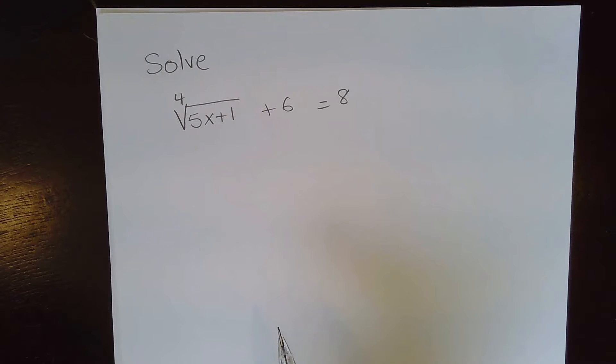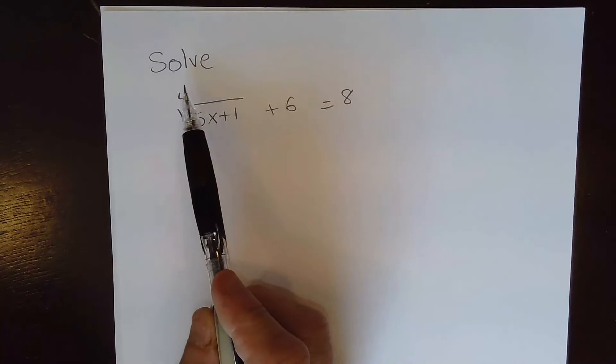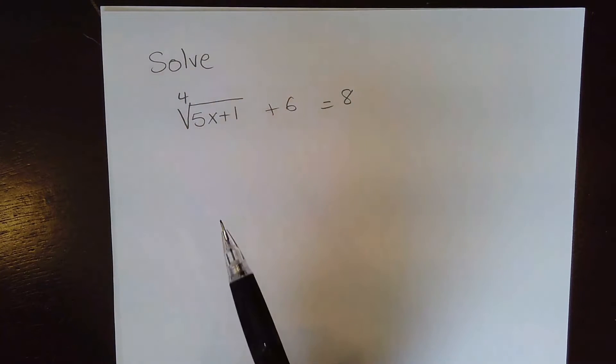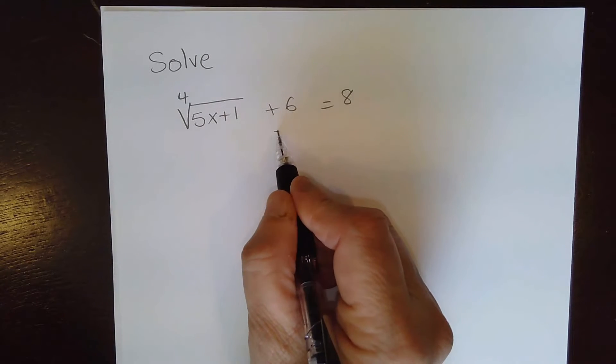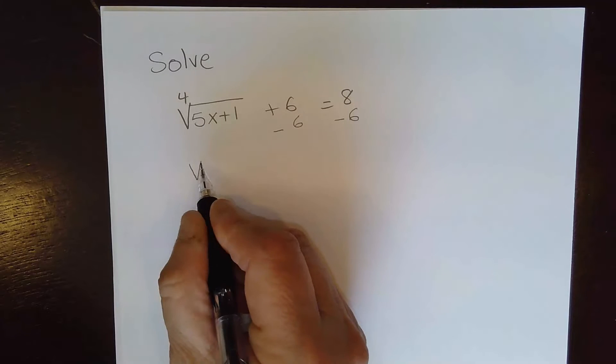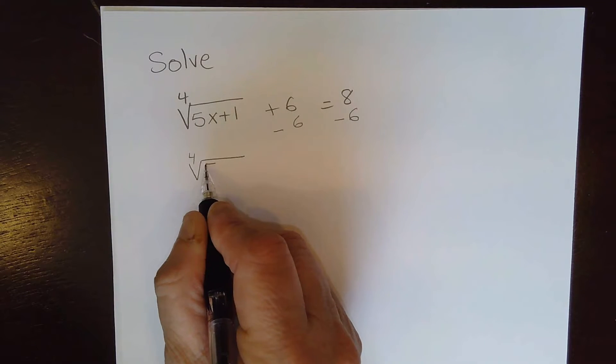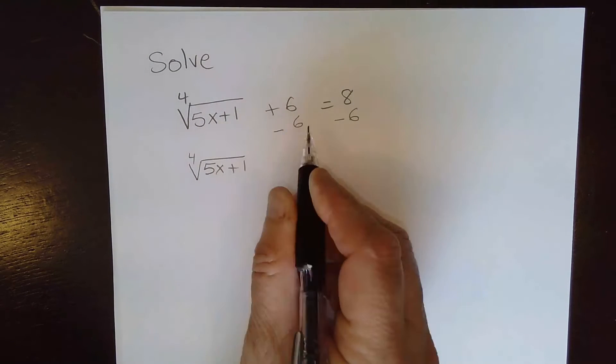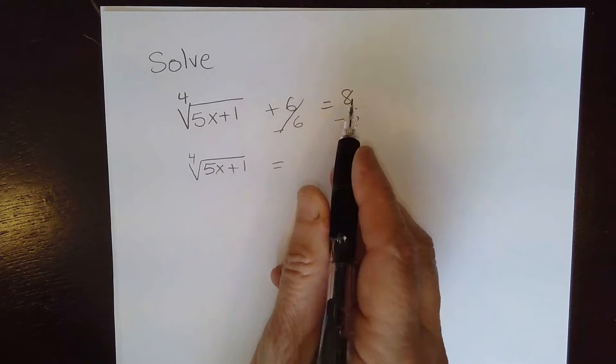Now to solve this radical equation, I need to isolate the radical on the left side of the equation. So I need to subtract 6 on both sides of the equation. And we will get 4th root of 5x plus 1. This cancels. Equal to 8 minus 6 which is 2.